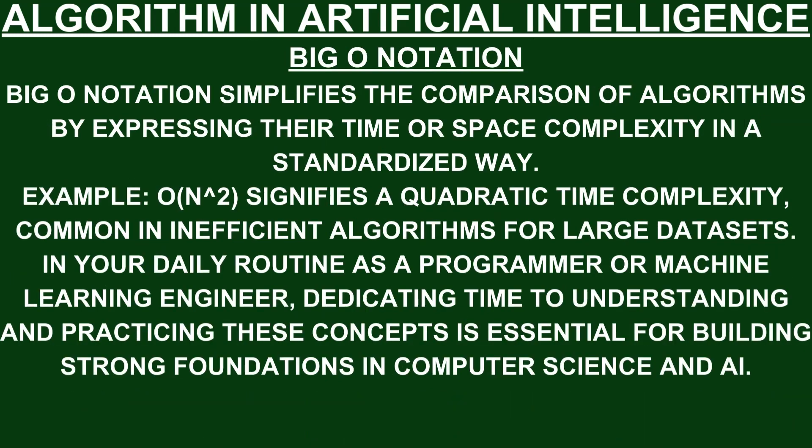Big O notation simplifies the comparison of algorithms by expressing their time or space complexity in a standardized way. For example, Big O notation O(n²) signifies a quadratic time complexity, common in inefficient algorithms for large datasets. In your daily routine as a programmer or machine learning engineer, dedicating time to understanding and practicing these concepts is essential for building strong foundations in computer science and artificial intelligence.